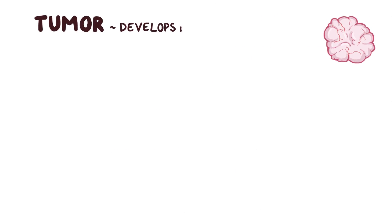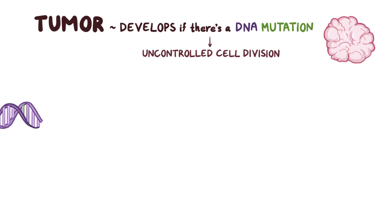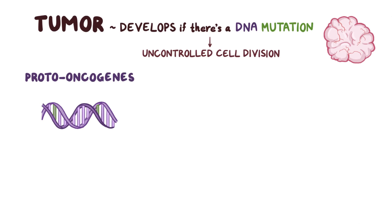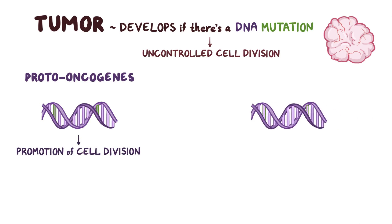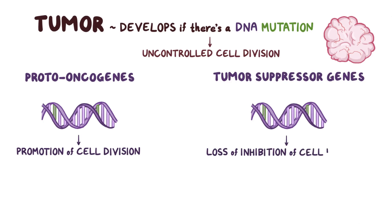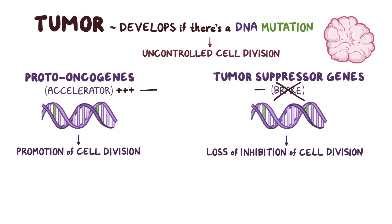A tumor develops if there's a DNA mutation in any of these cell types that leads to uncontrolled cell division. Typically, these are mutations in proto-oncogenes, which results in a promotion of cell division, or mutations in tumor suppressor genes, which results in a loss of inhibition of cell division. You can think of proto-oncogenes as the accelerator or gas pedal, and tumor suppressor genes as the brakes — too much acceleration, or an inability to brake, can lead to runaway cell division.